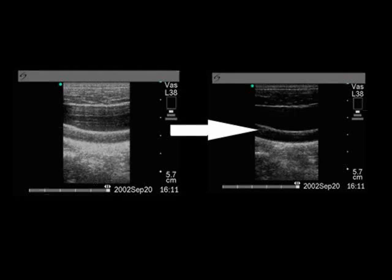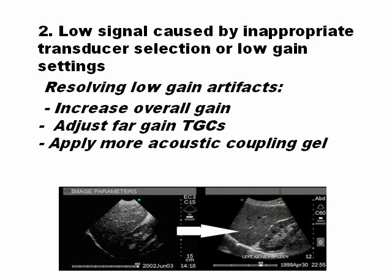Here you can see two pictures: the left picture has too much gain. Low signal caused by inappropriate transducer selection or low gain settings is also an issue. In this case, you can see the time gain compensation is very low in the deep areas, so you cannot see the parenchyma of the liver in the deeper areas. But time gain compensation itself can produce artifacts.